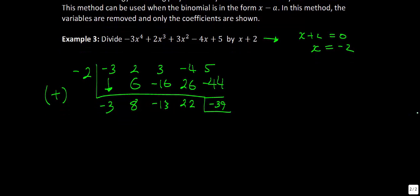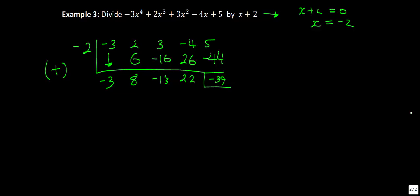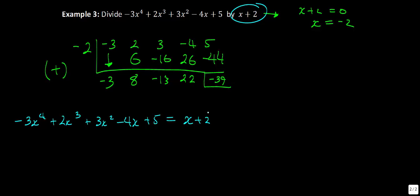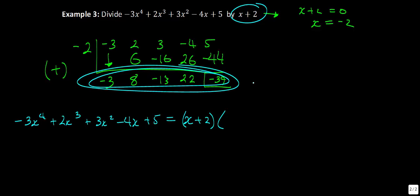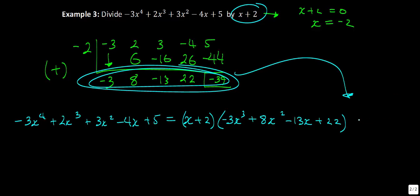So what does all this mean? If we write the division statement just like we did for the last question: our original polynomial is negative 3x to the fourth plus 2x cubed plus 3x squared minus 4x plus 5. We take our divisor, x plus 2, and multiply by our quotient. Reading the coefficients in descending order of powers, the quotient is negative 3x cubed plus 8x squared minus 13x plus 22. And our remainder is negative 39.